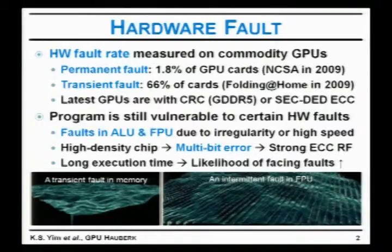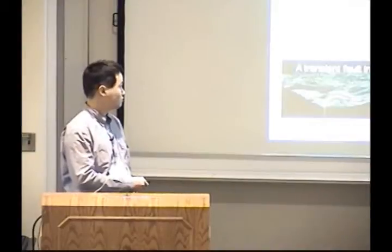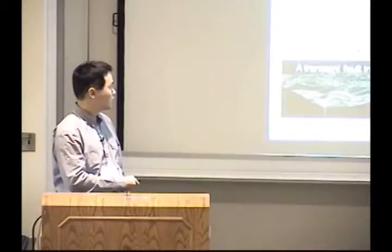We developed a fault injector for those commodity GPUs and performed some initial fault injection experiments. When you have a transient fault in the memory, we have a spike in the ocean surface simulation software, which is quite unnoticeable. But if we had an intermittent fault in the FPU, like even just several milliseconds, that causes these stride patterns in the surface of this ocean, simulated ocean, and this is clearly noticeable. So if we have a fault in those computational projects, that might be a big problem.